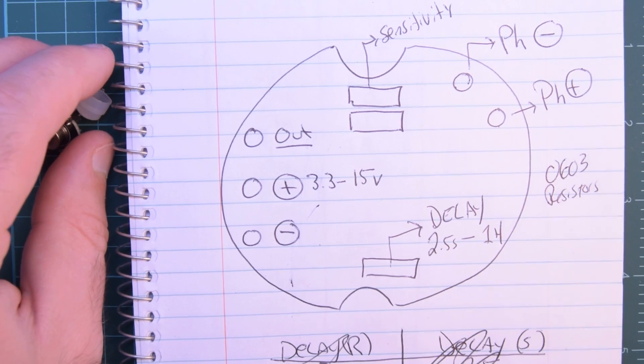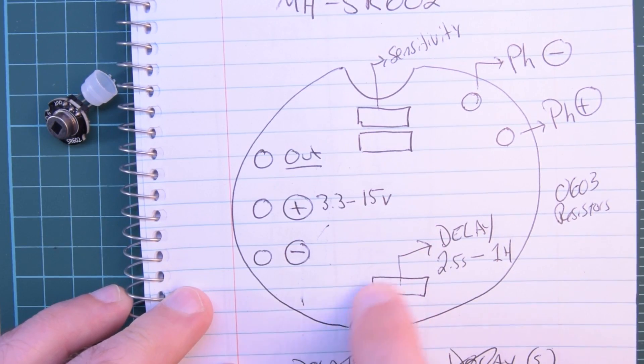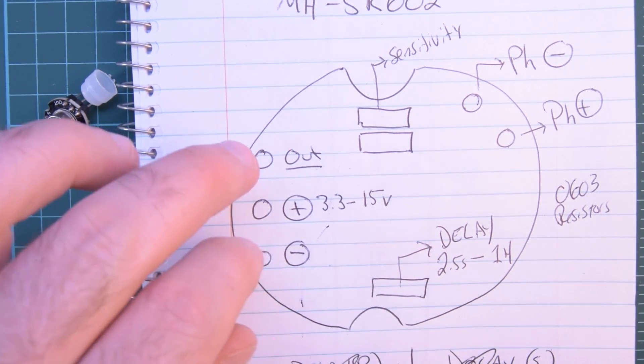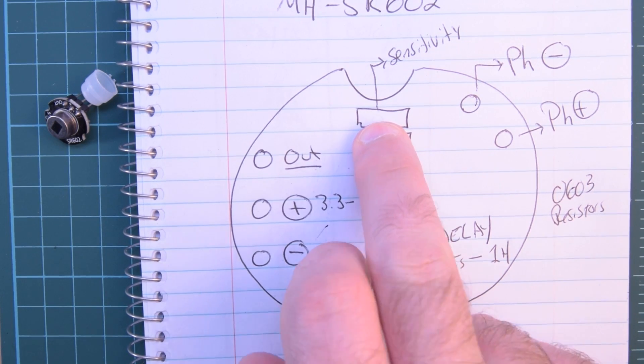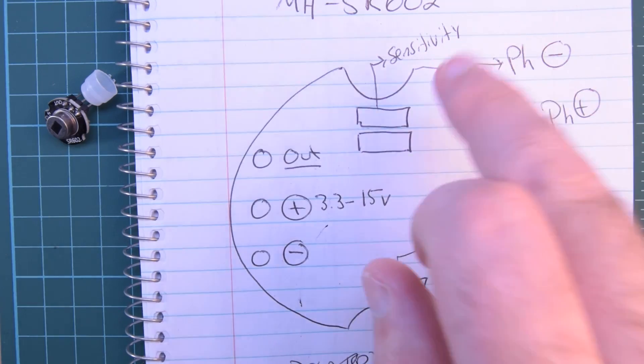There's the little diagram that I did. In the back, just remember these two little notches here and where these three wires come out. So, first of all, the top resistor here, their 0603 size, that is to adjust the sensitivity.